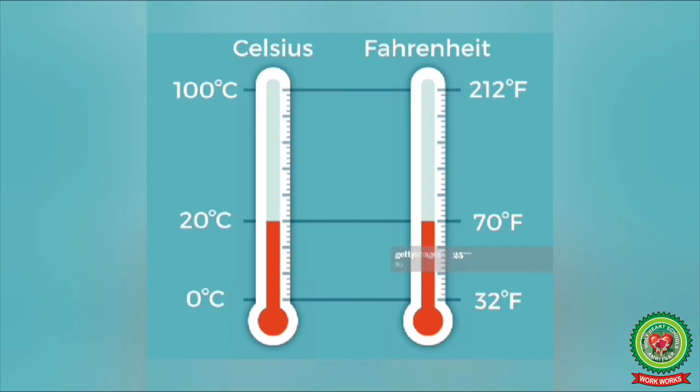In the Centigrade scale, the melting point of ice is marked as 0 degrees Celsius and the boiling point of water is 100 degrees Celsius. In the Fahrenheit scale, the freezing point of water or melting point of ice is 32 degrees Fahrenheit, whereas the uppermost limit — 212 degrees Fahrenheit — represents the boiling point of water.